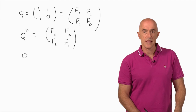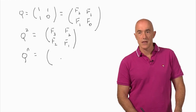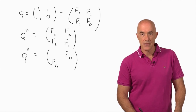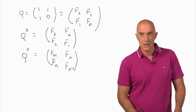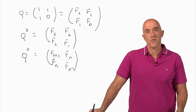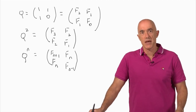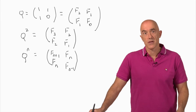So at this point we can write down the general result. Q to the nth power equals the matrix with F_(n+1), F_n in the first row and F_n, F_(n-1) in the second row. This is the general result for the Fibonacci Q matrix raised to the nth power. This will be an important result because it will make the proof of Cassini's identity rather elementary.